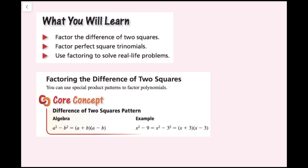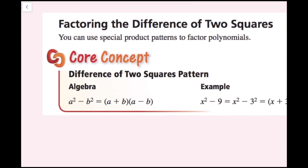You can use special product patterns to factor polynomials. We've looked at these before. In this case, we have a difference of squares: a squared minus b squared. If you remember, that's just what happens when we do the quantity a plus b times the quantity a minus b. So right away, if you see something like this, you can immediately write it in factored form as a plus b times the quantity a minus b.